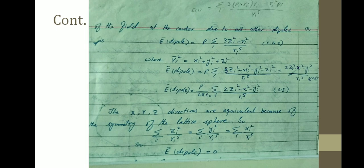E_dipole equals p · Σ(3z_i² − r_i²) / r_i⁵. This relation comes from the electric field due to all other dipoles: E(r) = Σ_i [3(p_i · r̂_i)r̂_i − p_i] / r_i⁵. Taking the dot product of polarization with the z-component and substituting, we get E_dipole equals p · Σ(3z_i² − x_i² − y_i² − z_i²) / r_i⁵. Dividing by 4πε₀ gives the value in the SI system.